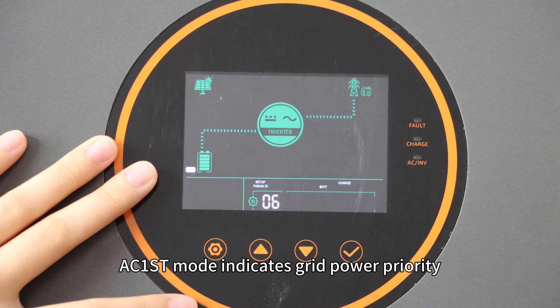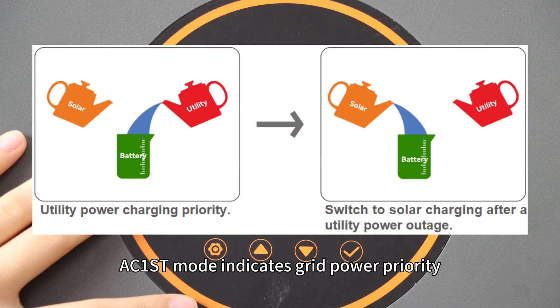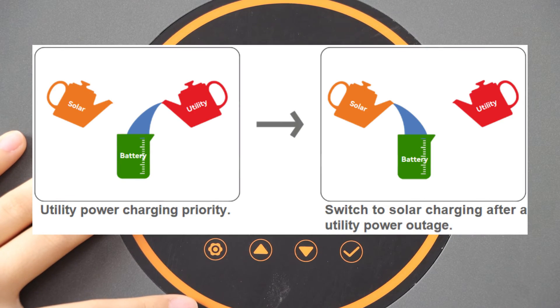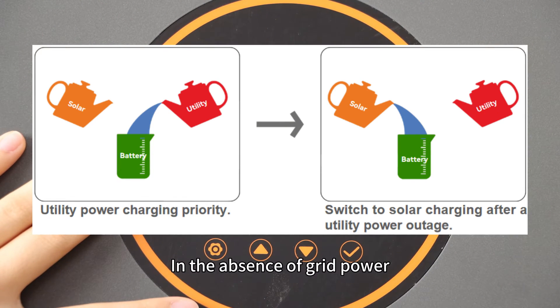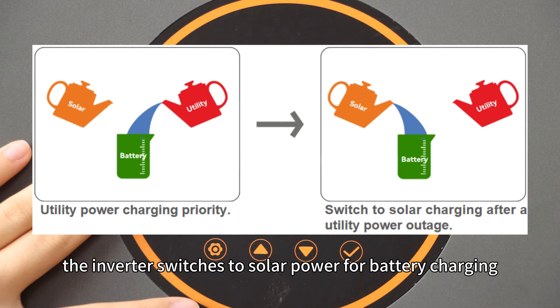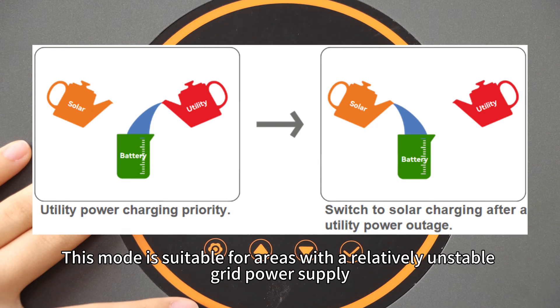AC-1ST mode indicates grid power priority, with grid power taking precedence for battery charging. In the absence of grid power, the inverter switches to solar power for battery charging.